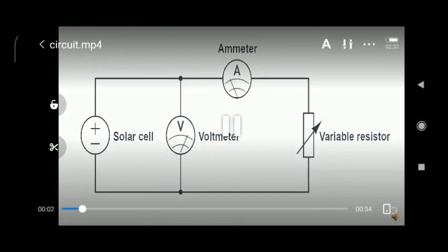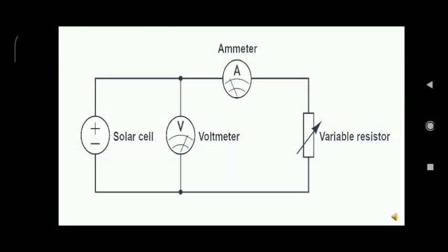The circuit diagram for measuring IV characteristics is shown here. You can see the solar cell, and a voltmeter is connected parallel to the solar cell. An ammeter, or milliammeter, is connected in series to the circuit.